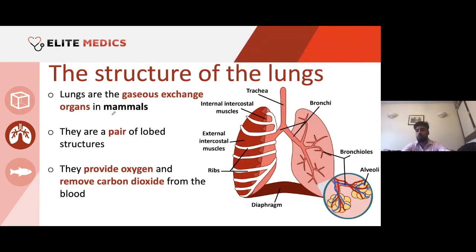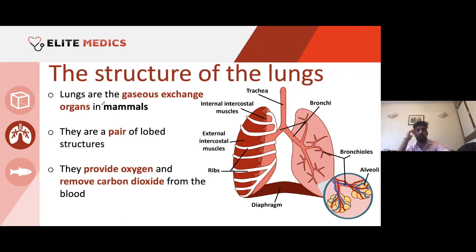So let's have a look at the structure of the lungs. Lungs are the only gas exchange organs in mammals. You may have seen a diagram like this at GCSE, but you may not have seen the differences between internal and external intercostal muscles — everything else should be fairly familiar from GCSE.